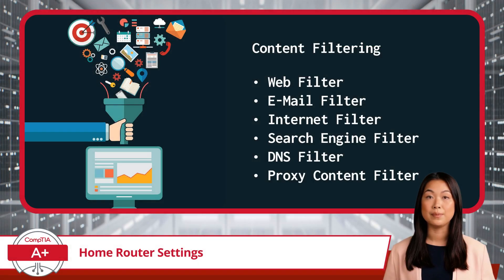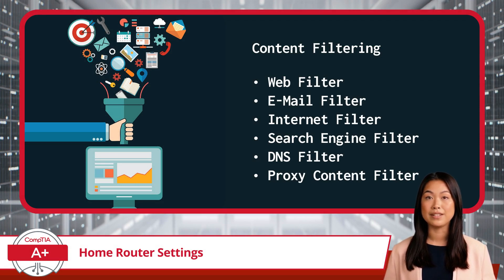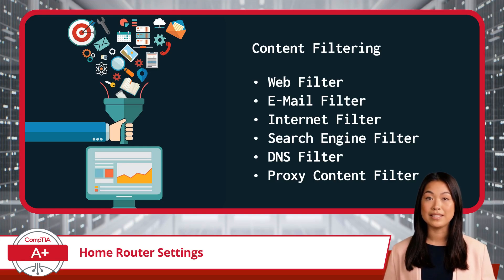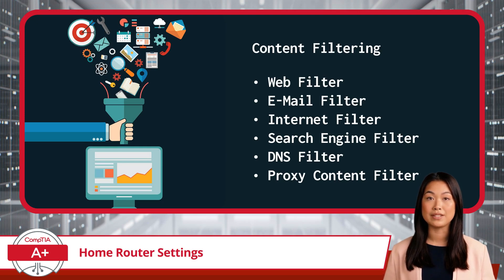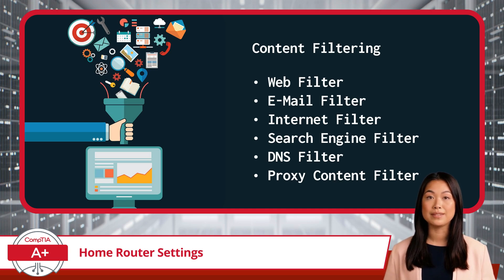Next up, we have content filtering. If you're running a family-friendly network or just trying to keep distractions in check, content filtering is a handy feature. This lets you block certain websites or content categories, sift through emails, or monitor network traffic based on specified rules — whether to keep inappropriate materials at bay or ensure employees aren't spending all day watching cat videos.